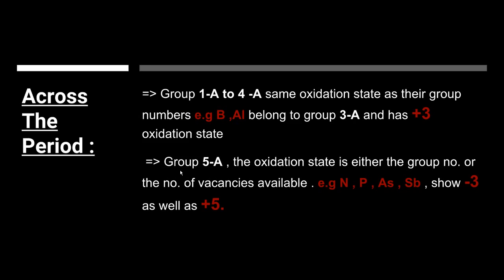For group 5A, the elements in this group have oxidation states that are either the number of electrons present in the valence shell, which is the same as the group number, or the number of vacancies available in these shells. For example, nitrogen, phosphorus, arsenic, and antimony show negative 3 as well as positive 5 oxidation states frequently.